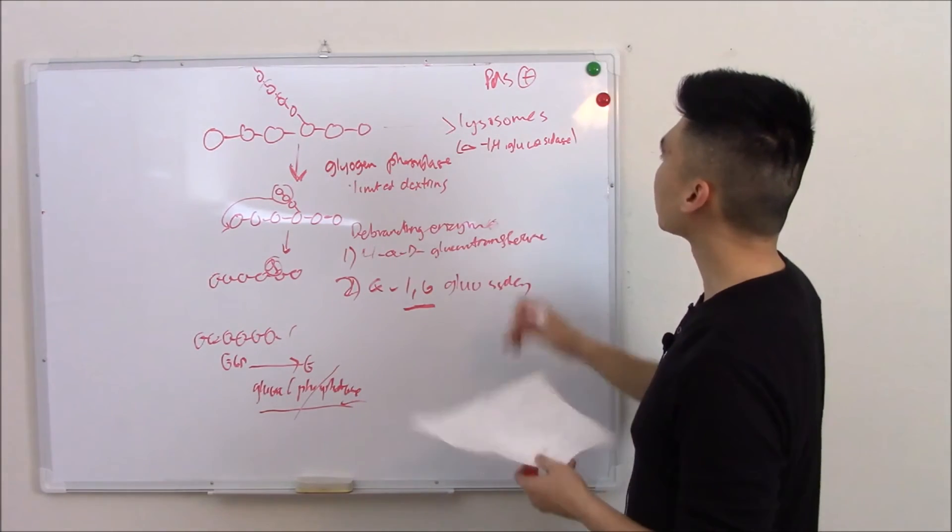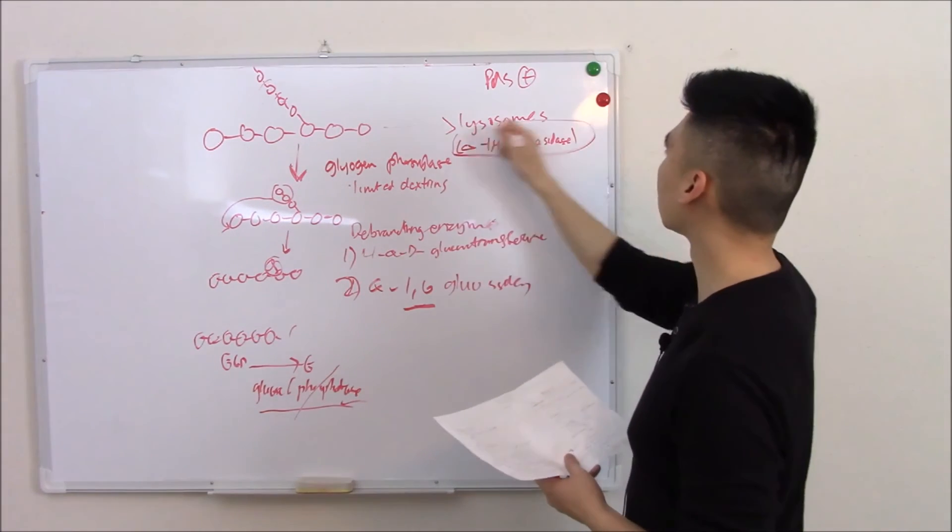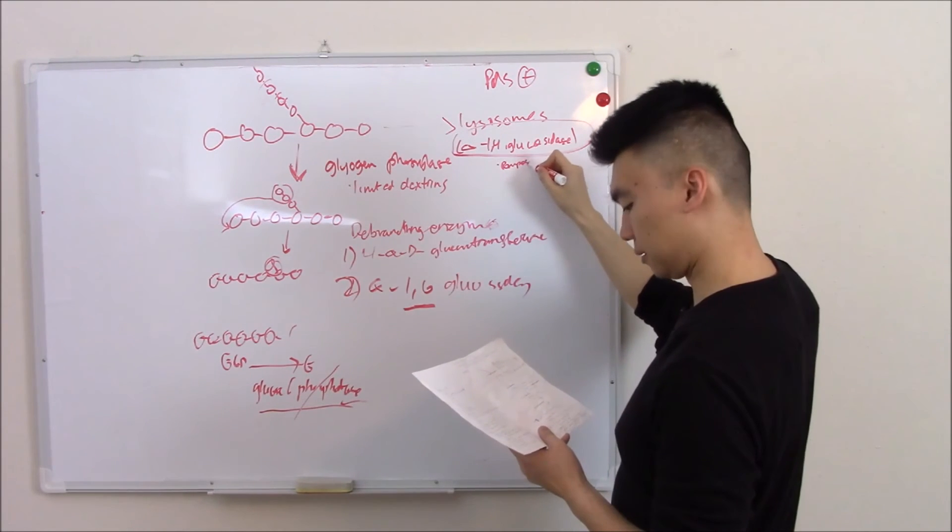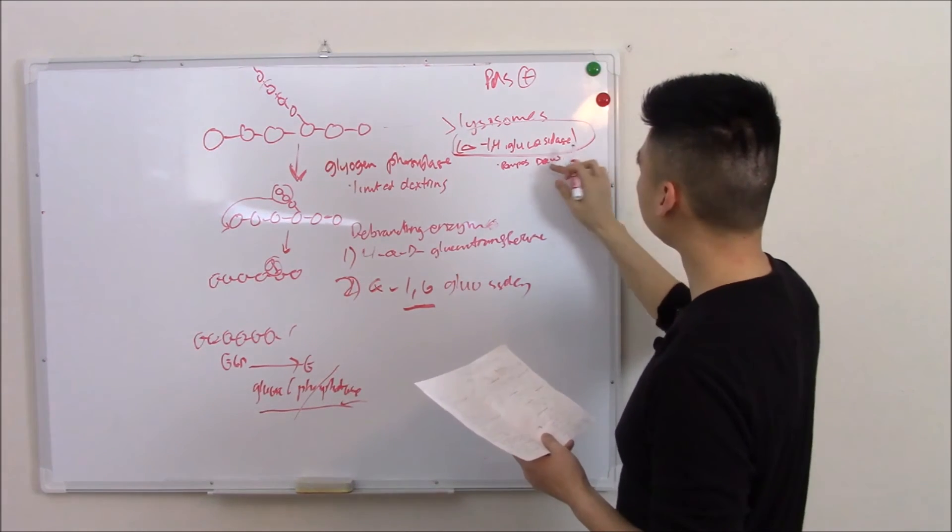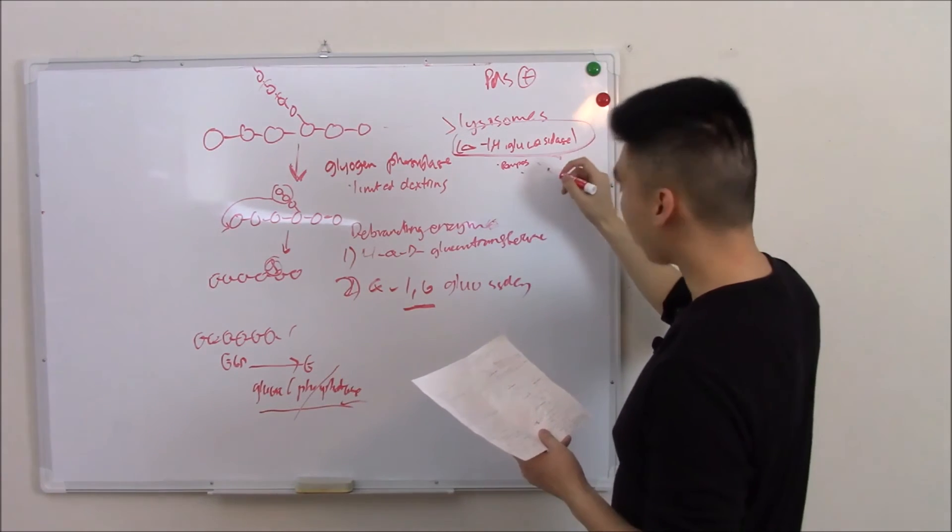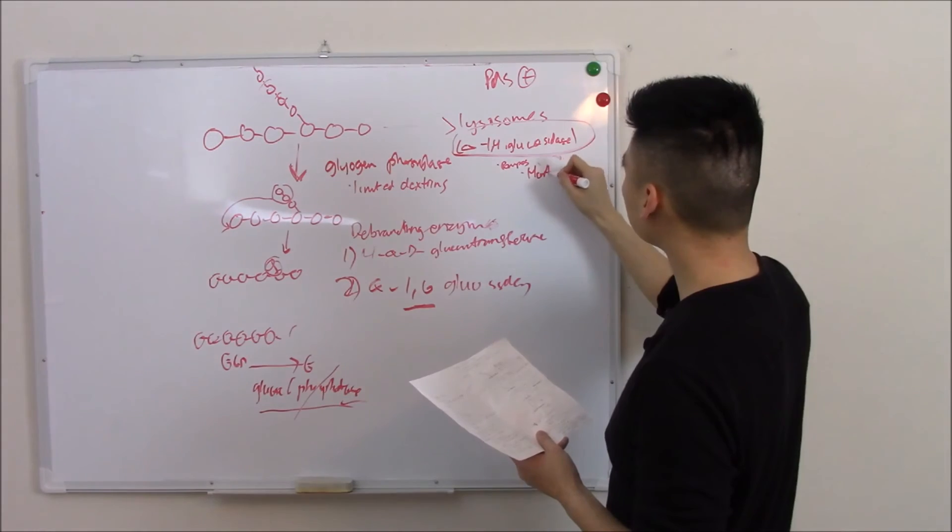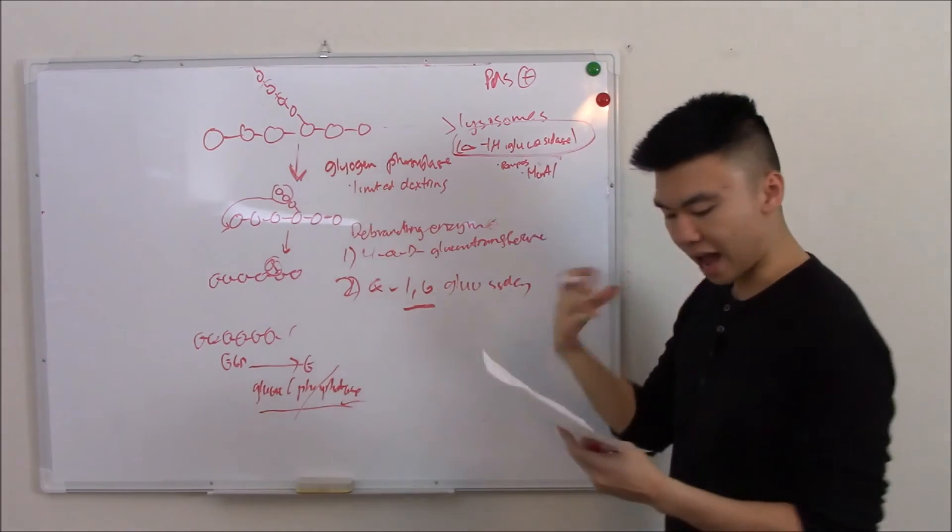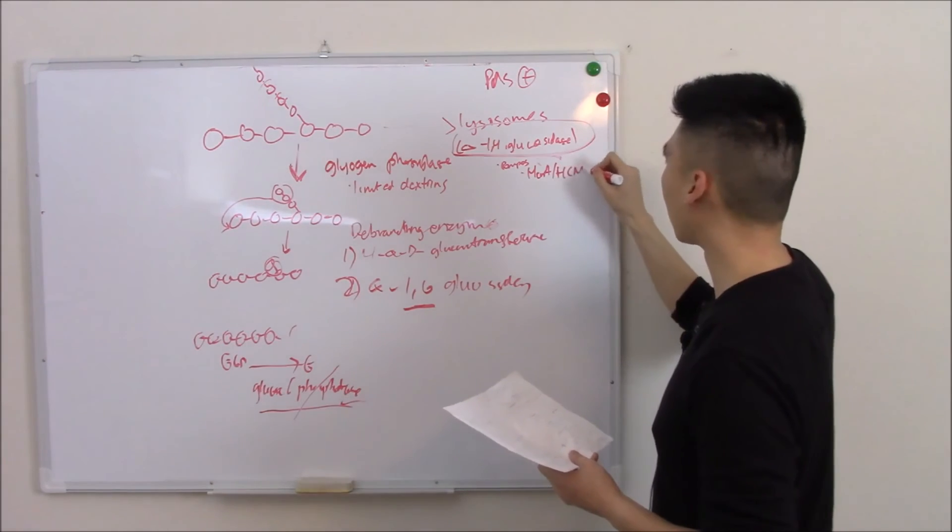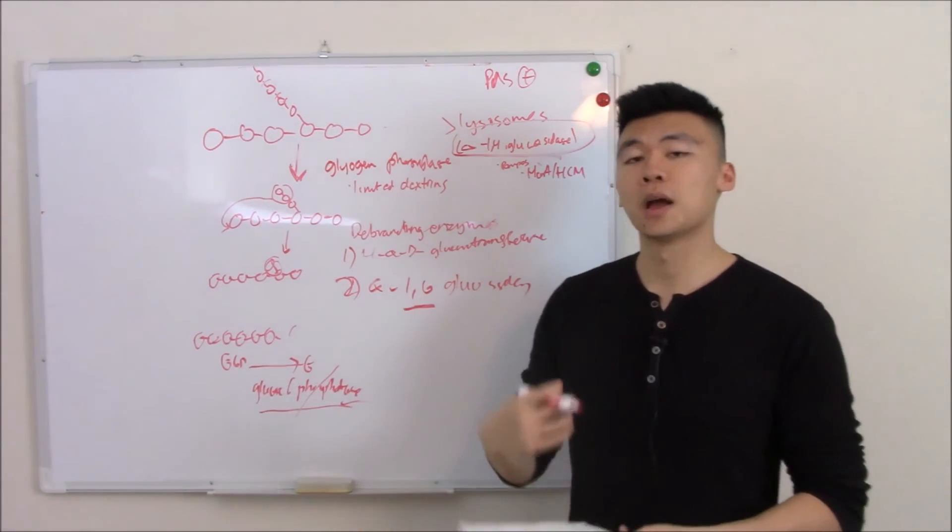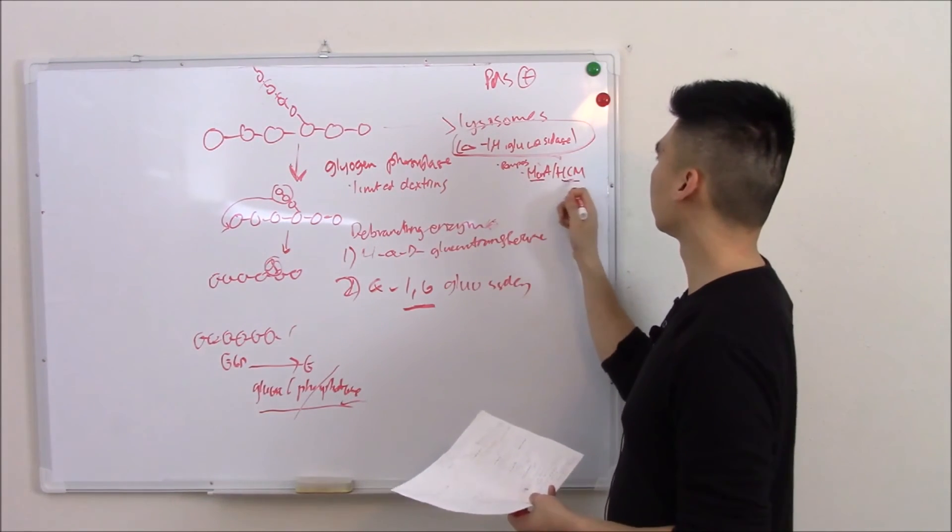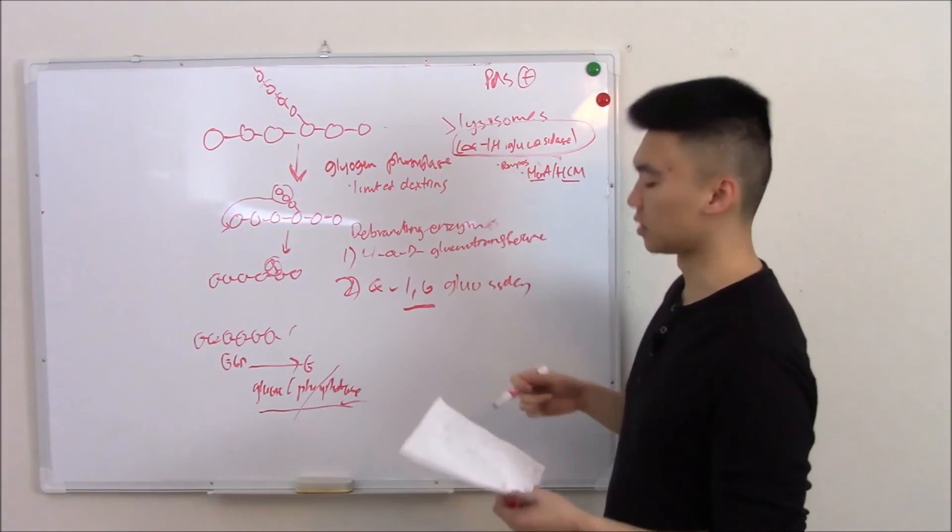Let's just go down the list. If you're deficient in alpha 1-4 glucosidase, that is called Pompe's disease. Pompe's affects the heart mostly, and so you're going to have cardiomegaly, you're going to have hypertrophic cardiomyopathy. The easiest way to remember is Pompe sounds like pump - the heart's a pump. And this is the enzyme that's deficient.